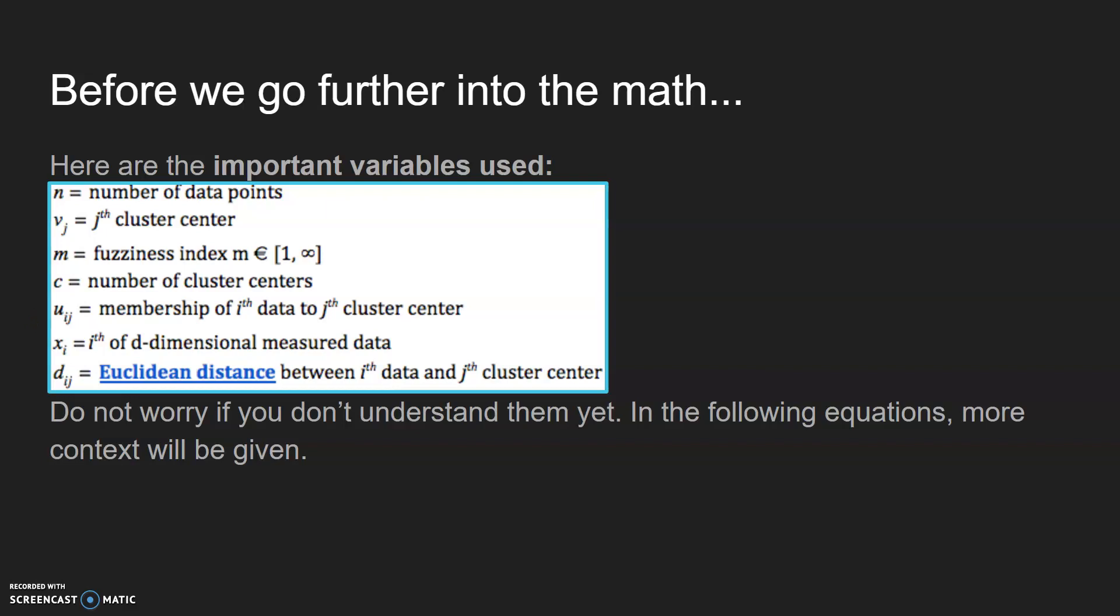UIJ is the membership of the ith data to the jth cluster center. XI is the ith of D-dimensional measured data, and DIJ is the Euclidean distance between the ith data and jth cluster.